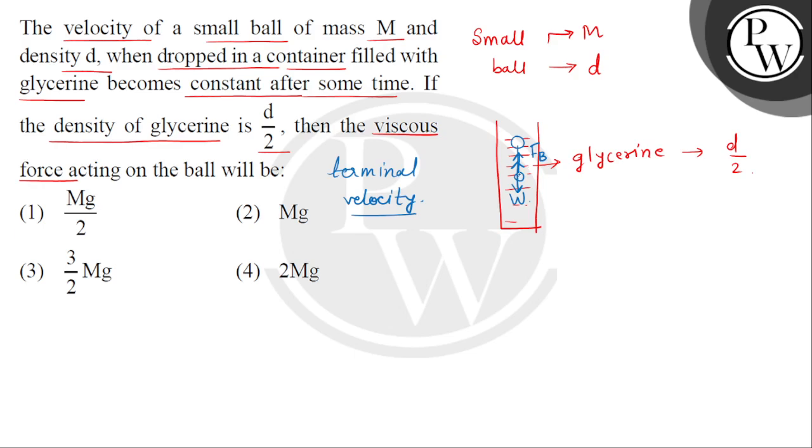and the third force which is also acting opposite to the direction of motion of this ball is the viscous force. तो हमें find करना है कि जब यह ball terminal velocity acquire कर लेती है, तब इस पर कितना viscous force act हो रहा है, it means we have to find out the value of F_V.